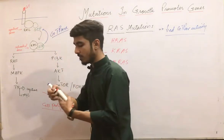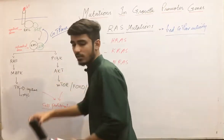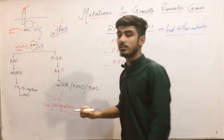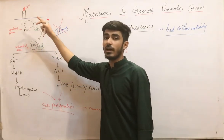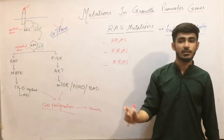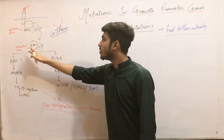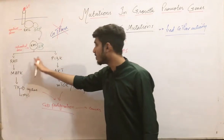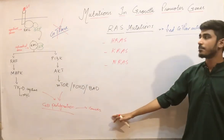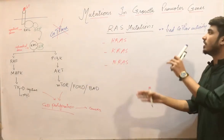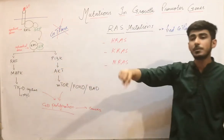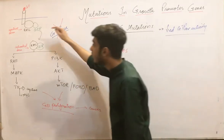This GTPase normally converts GTP back to GDP, but in the mutation, this GTPase activity is lost. Therefore, GTP is not converted back to GDP, and RAS is not converted back to its inactive form. RAS remains prolonged and activated, causing over-activation of the pathway, over-proliferation, and development of cancer.